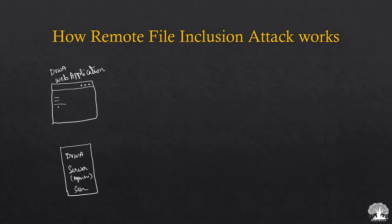Any request made on this DVWA application — when you click on a file or request a page to be loaded — a request is sent to the DVWA server, and then the response is sent back to the web application and the page is displayed. That's as simple as that. Now, what an attacker might do is if they identify that this web application is vulnerable to remote file inclusion, where they can include a file remotely that is not present on this particular server.